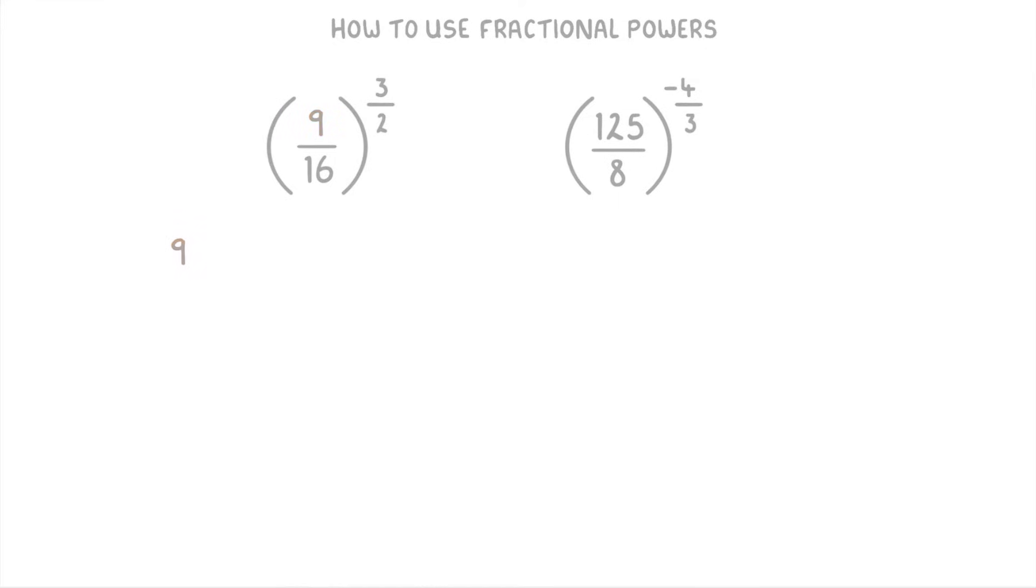So, 9 to the power of 3 over 2 divided by 16 to the power of 3 over 2. Next, we can rewrite the top as the square root of 9 cubed, and the bottom as the square root of 16 cubed.